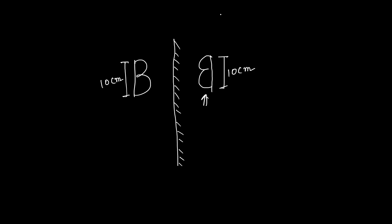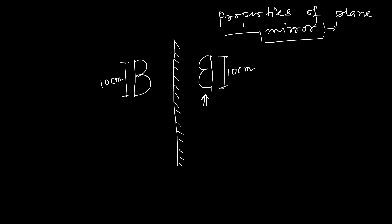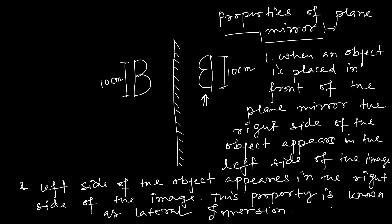We are writing the properties of a plane mirror. The first property: whenever any object is placed in front of the plane mirror, the right side of the object appears on the left side of the image and the left side of the object appears on the right side of the image. This property is known as lateral inversion. You can stop the video and write this down.